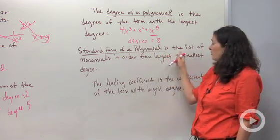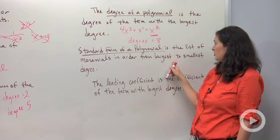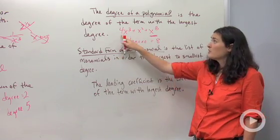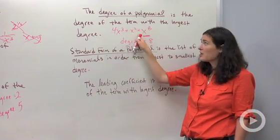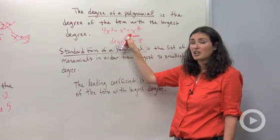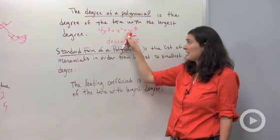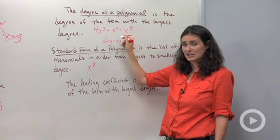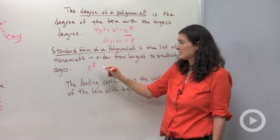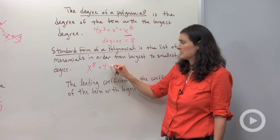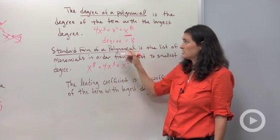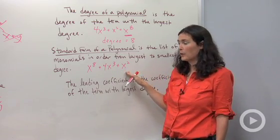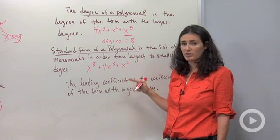Standard form of a polynomial is the list of monomials in order from largest to smallest degree or exponent. So this trinomial right here is not in standard form because my largest degree term is this guy here. If I wanted to write it in standard form, that x to the 8th business needs to come first. My next largest degree is this guy because the exponent is 3. And then my smallest degree for this trinomial is that x squared term. This is what's called standard form because my exponents go in order from highest to lowest.